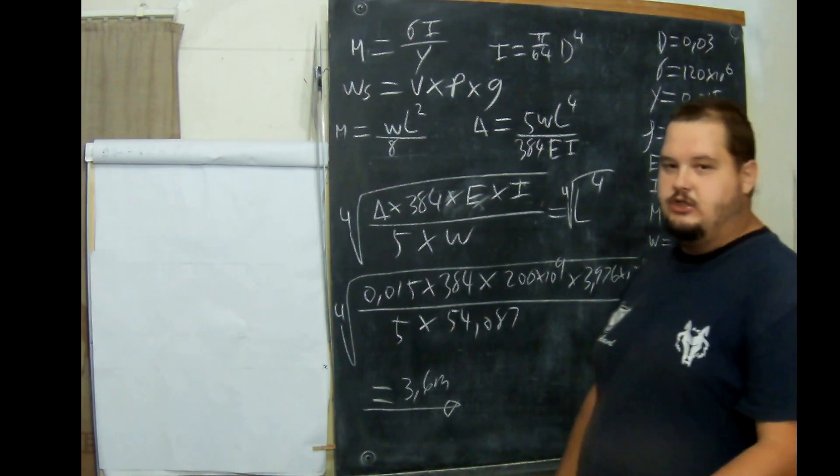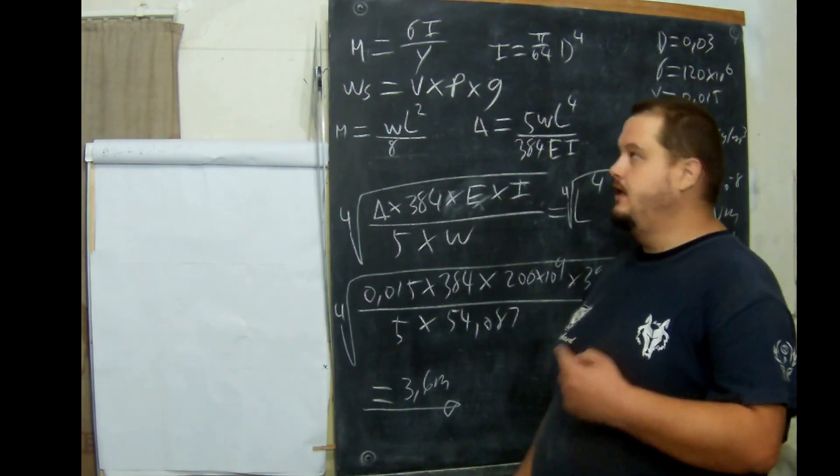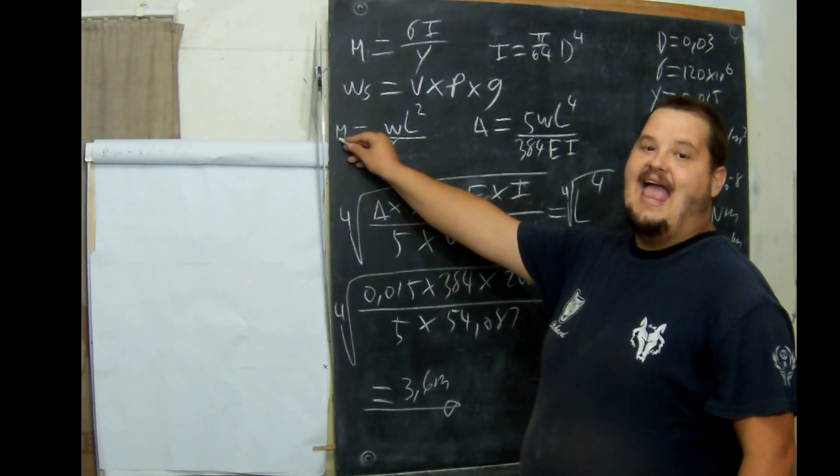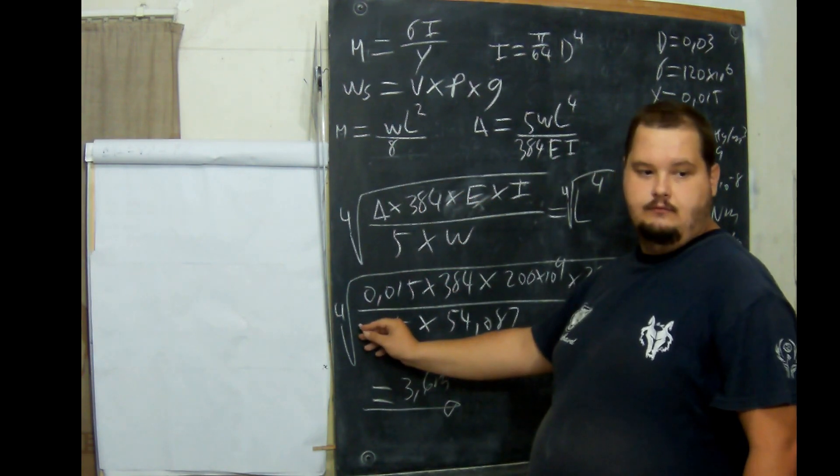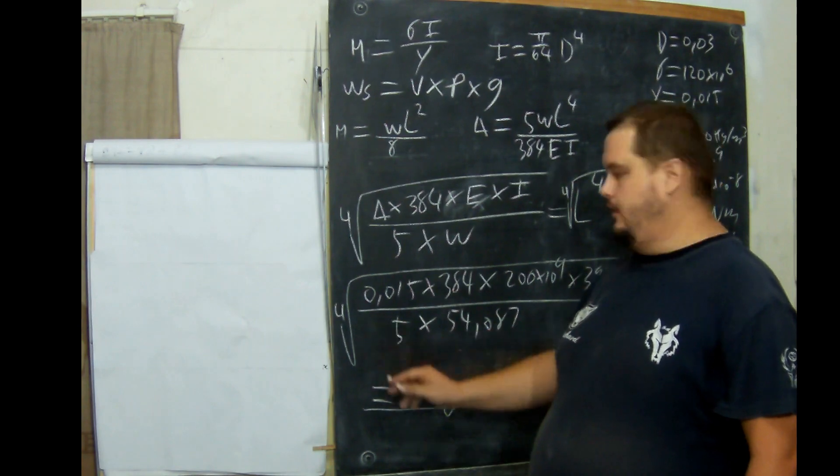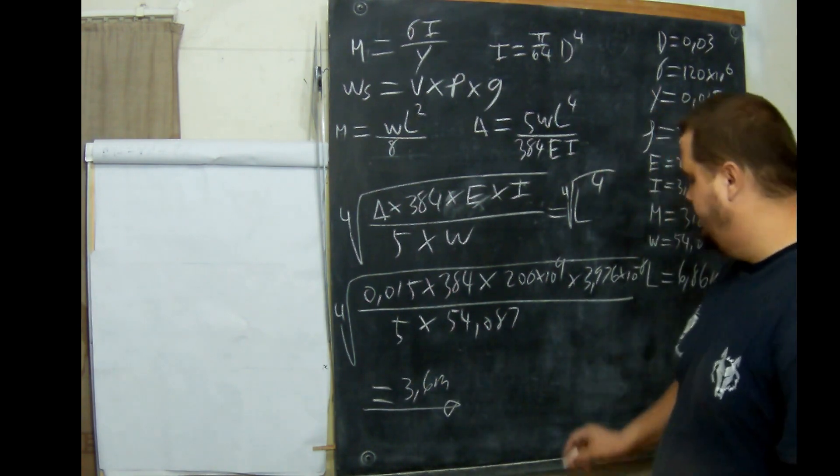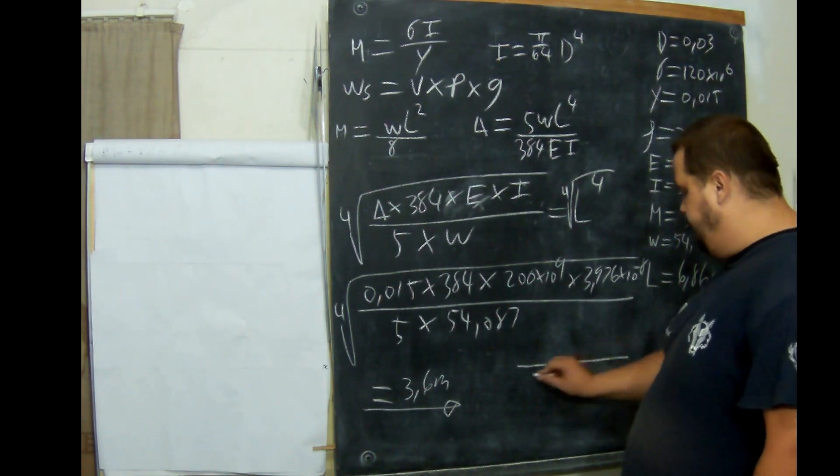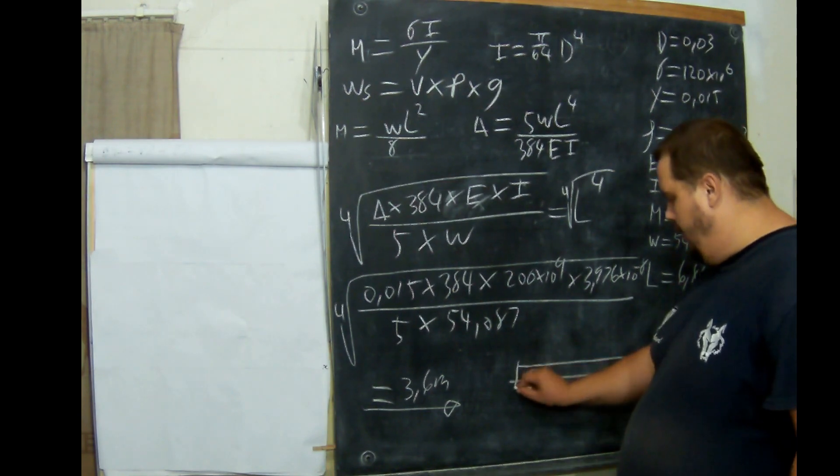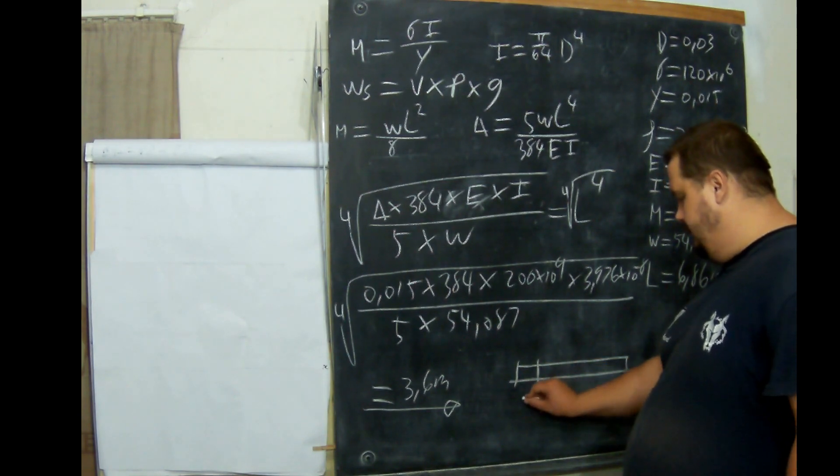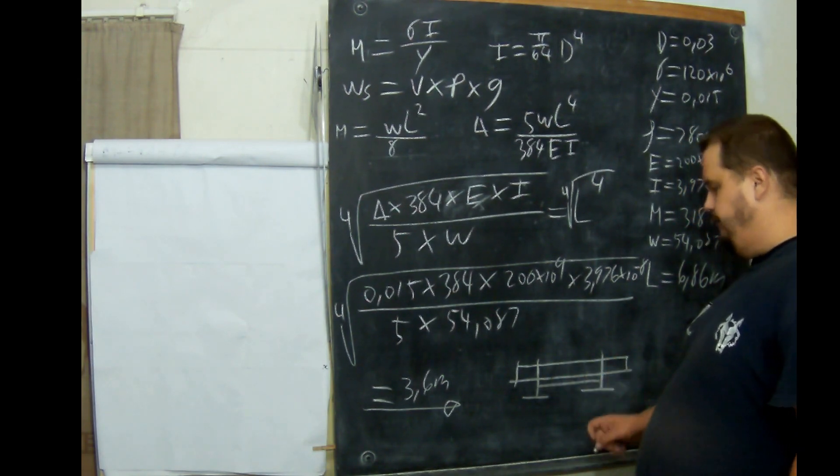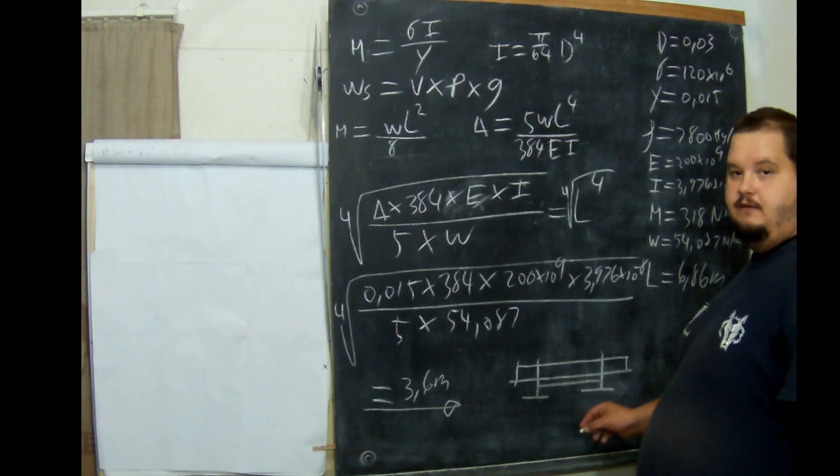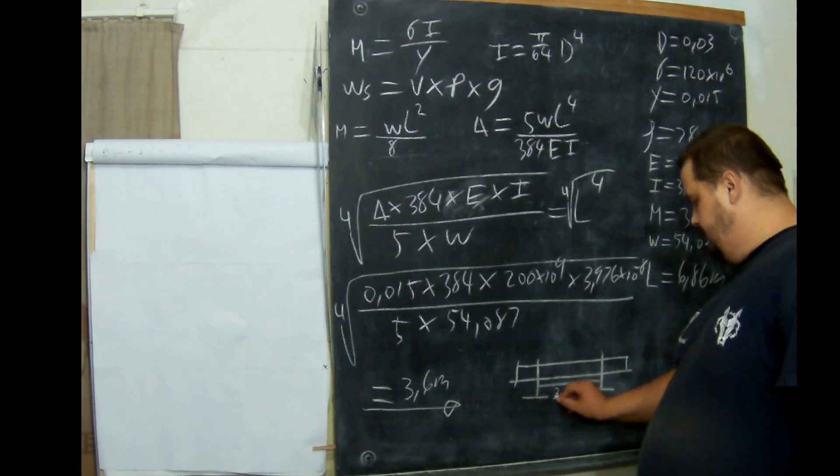If you read the question, it says it must have moment of resistance and deflection. It must have both. That's why it's 3.6. The optimal placing for the supports on our shaft, the optimal placing of the supports is 3.6 meters apart.